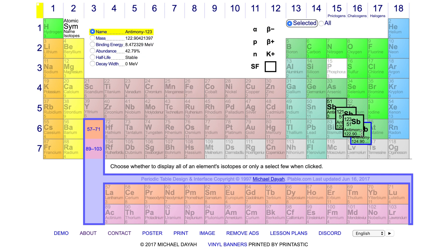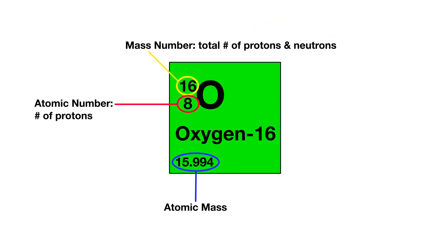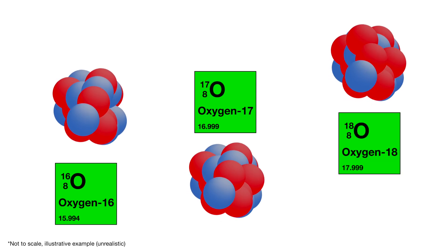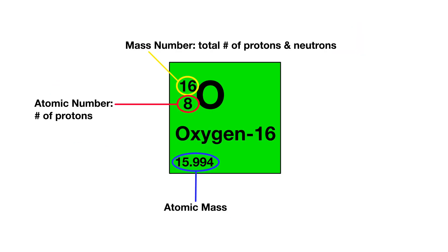We name these isotopes based on the total number of protons and neutrons contained in the nucleus. This number is called the mass number. For example, oxygen has three isotopes called oxygen-16, oxygen-17, and oxygen-18. In the periodic table, the listed mass is for the most common isotope — in oxygen's case, oxygen-16. Some isotopes are stable, while others are not. For example, carbon-12 and carbon-13 are stable, but carbon-14 is radioactive. The specifics of radioactivity are discussed in greater detail in another lesson.